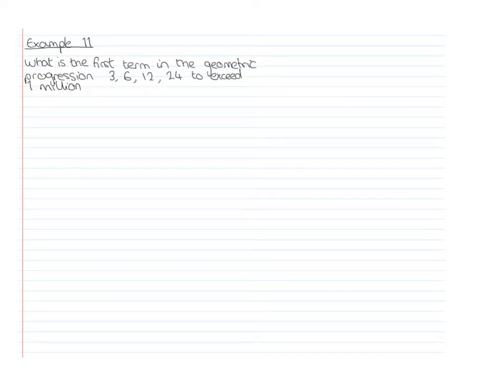This is a demonstration video going through the last example, example 11 from chapter 3.3 in year 2 pure geometric sequences. The question is: what is the first term in the geometric progression 3, 6, 12, 24 to exceed 1 million?